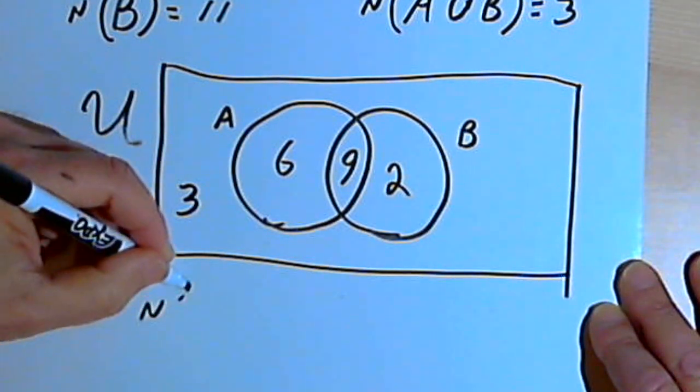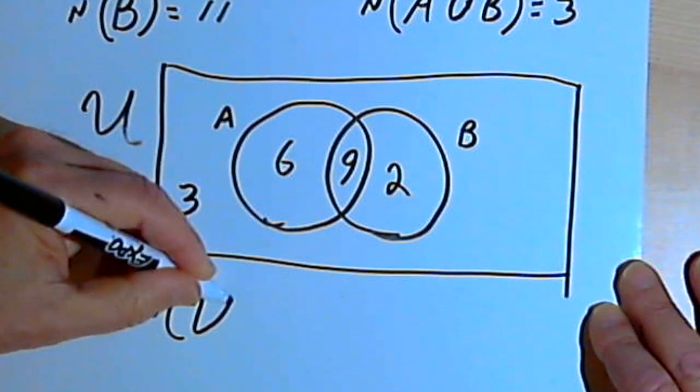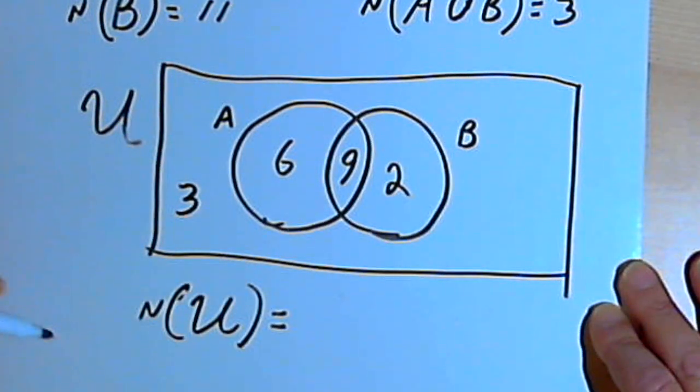And I could write that. The number of elements in the universal set is 20.